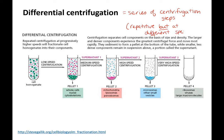What I mean by repetitive is that here's your starting solution, which has all these different-sized molecules. You do a low speed spin, and the really big stuff comes to the bottom in the pellet. You leave that pellet, take all the liquid, put it in a new tube, and spin it again. Now you're spinning a little faster so the medium-sized molecules come down to form a pellet. Then you take all the liquid off and spin it again.